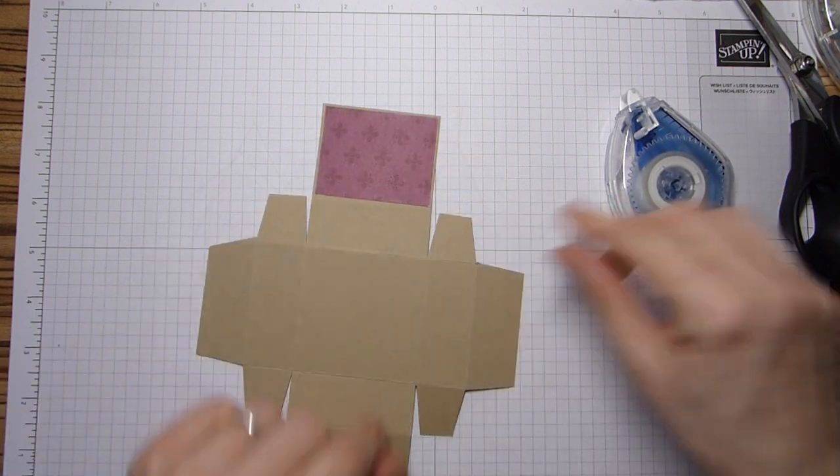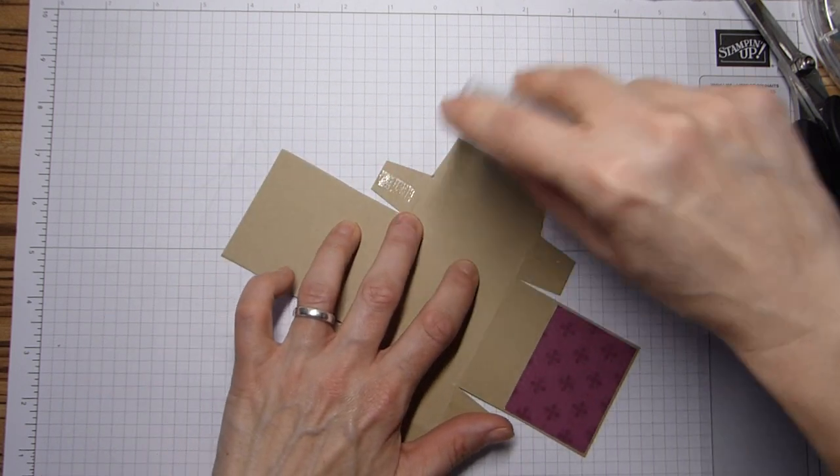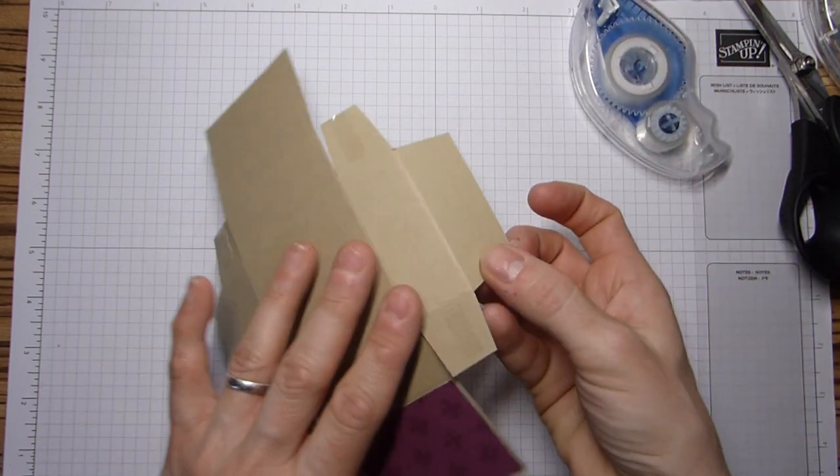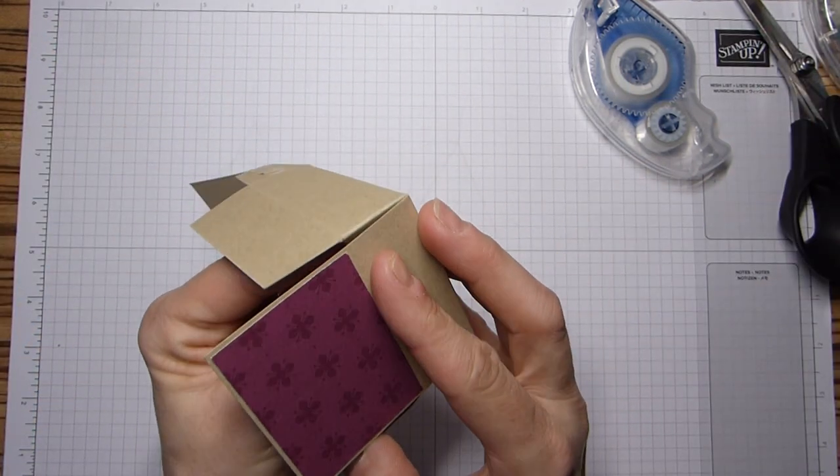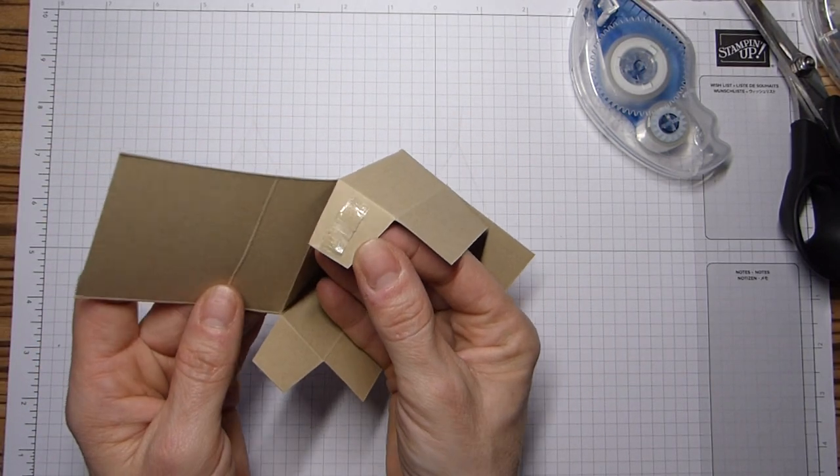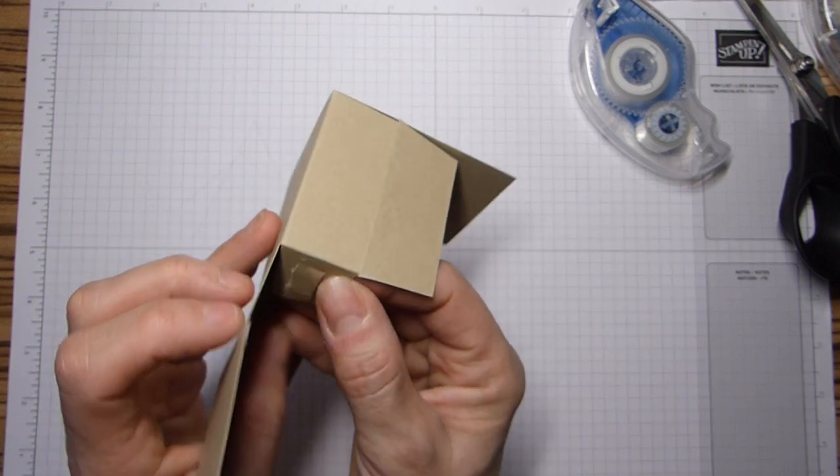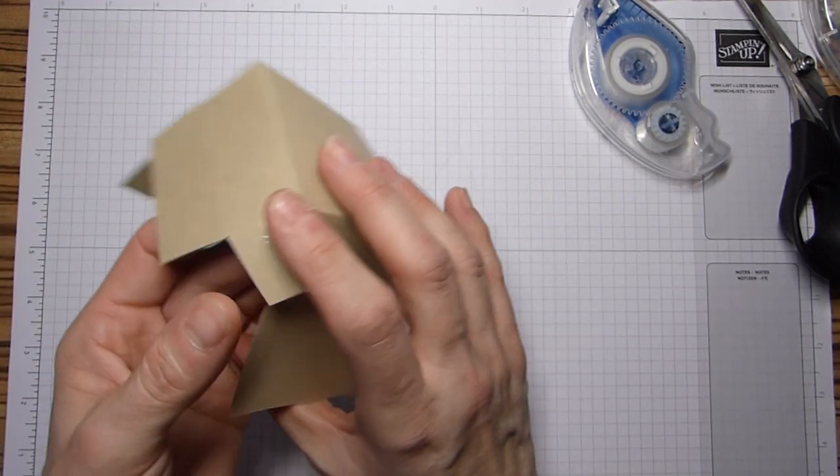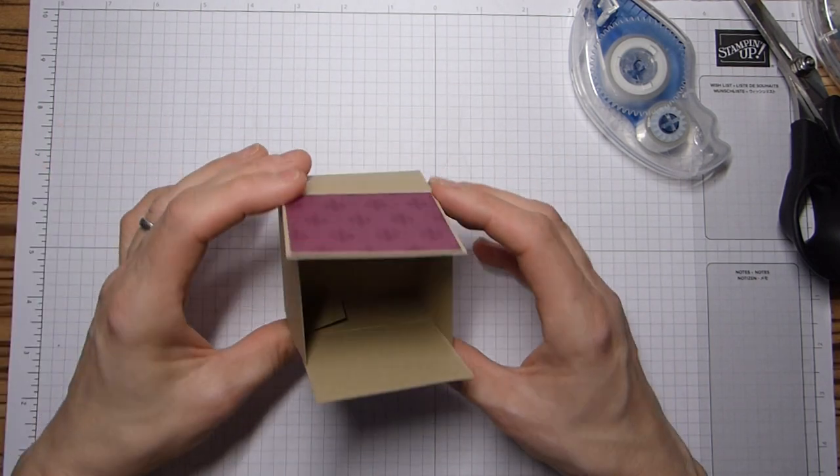Back to this one then. So we've put my DSP on one of the ends here and then we are simply going to put some adhesive on the tabs and fold these up like we would if we were creating a box. Sometimes I don't know if you guys find this, that the Seal Plus tears at my card as opposed to putting the adhesive down. I may have to just have a little chat with Stampin' Up and see why that happens.